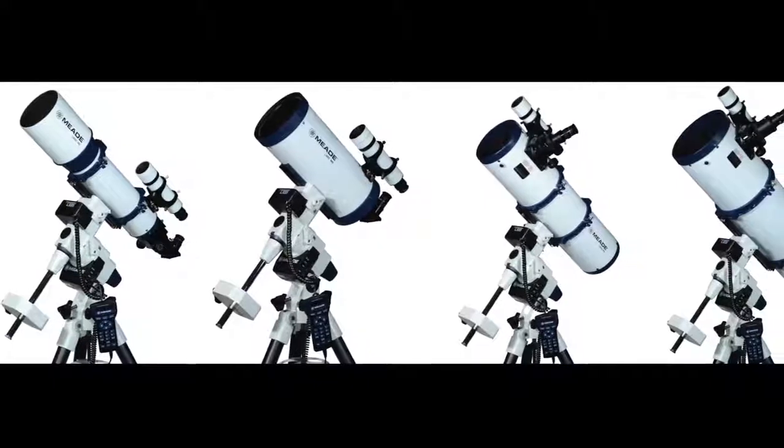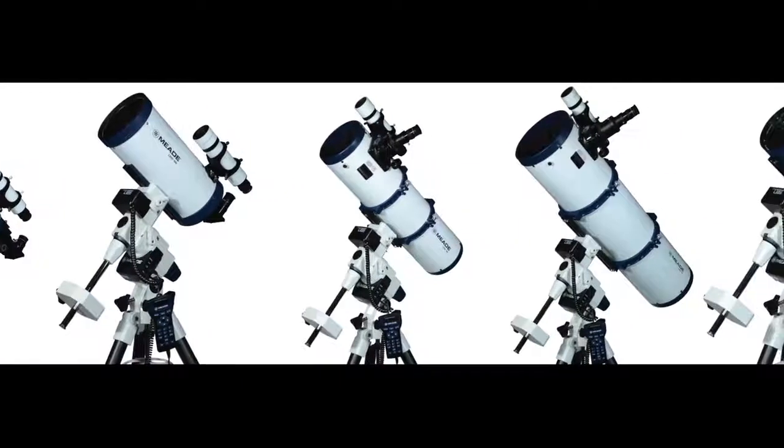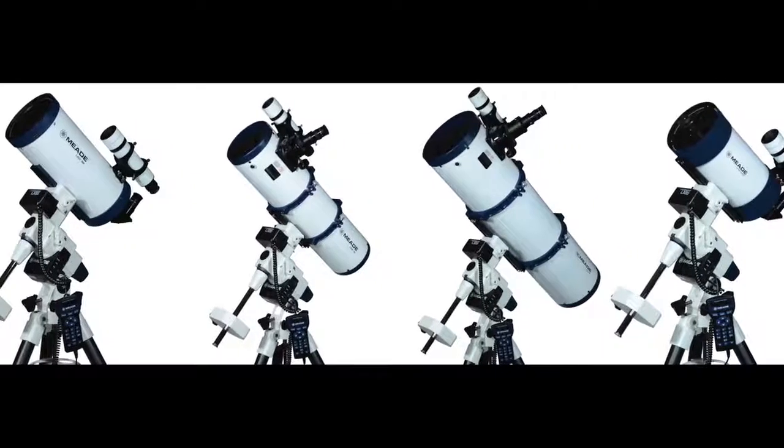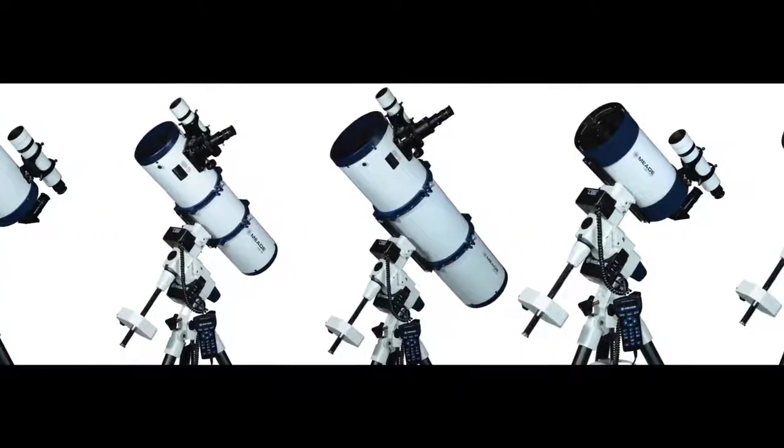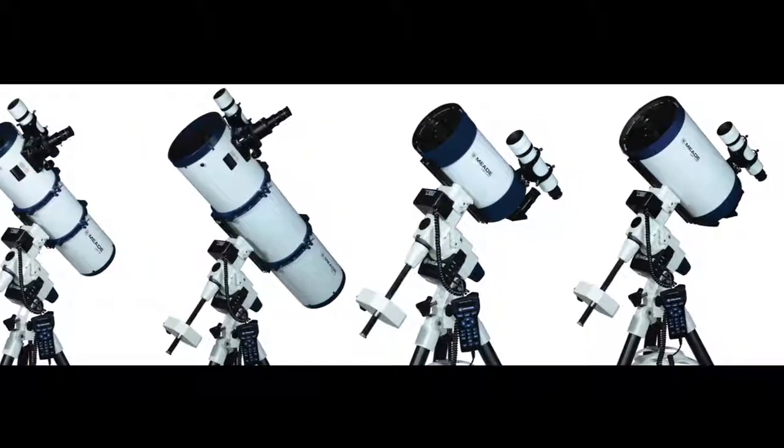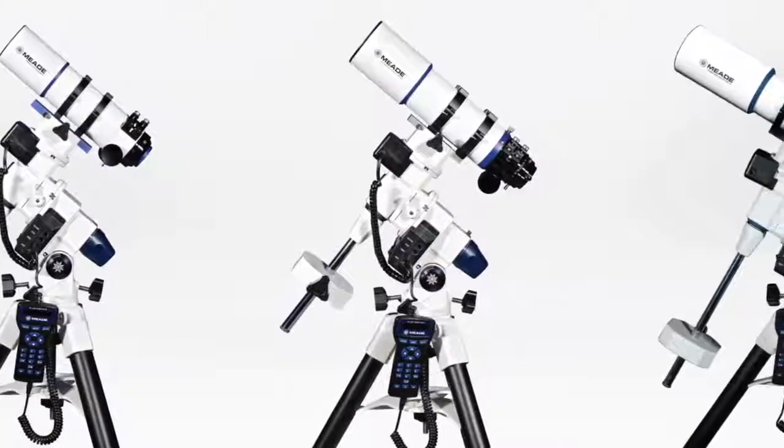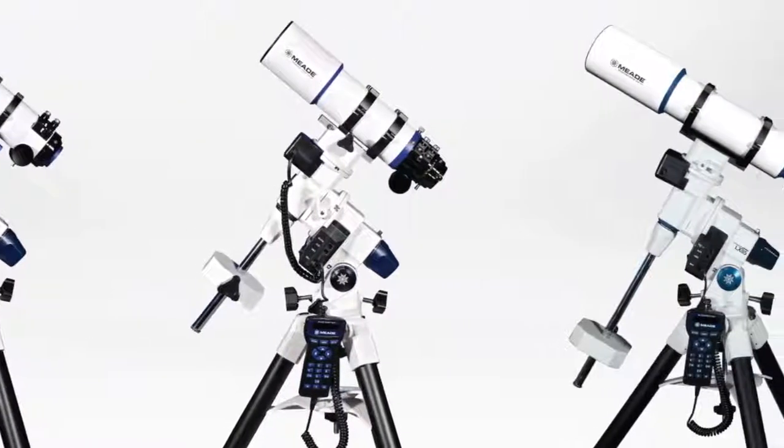The LX85 is available in nine different apertures, including a 5-inch refractor, a 6-inch Maksutov-Cassegrain, a 6-inch and 8-inch reflector, and a 6-inch and 8-inch advanced coma-free or ACF. The LX85 is also offered with the Series 6000 Apos, including the 70mm Astrograph, and 80mm and 115mm Apo.